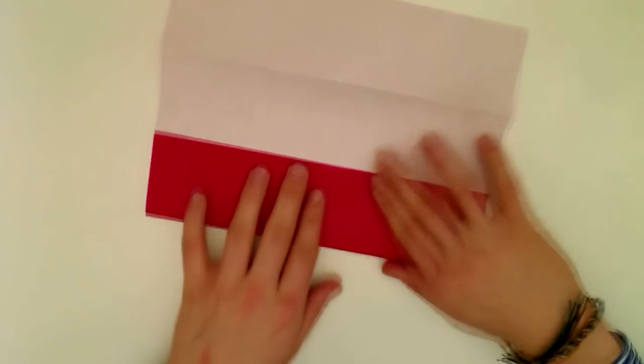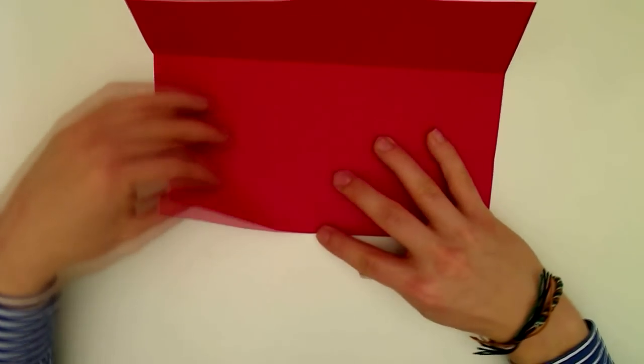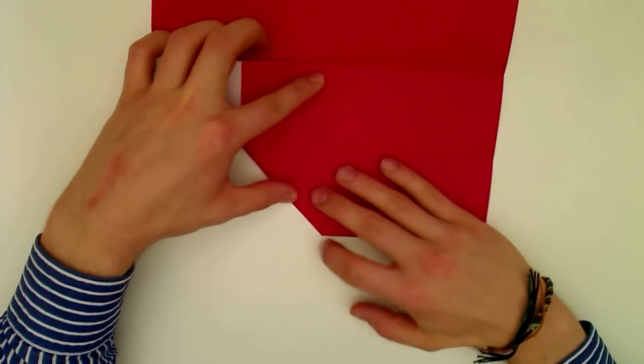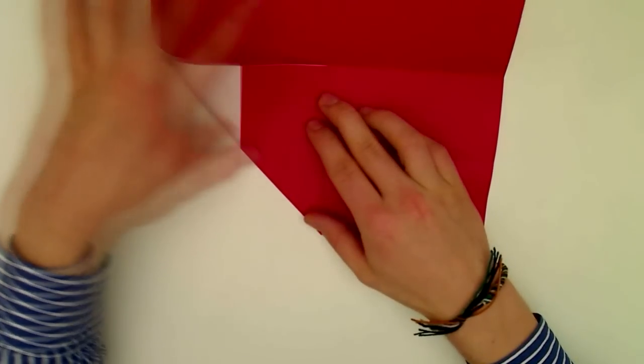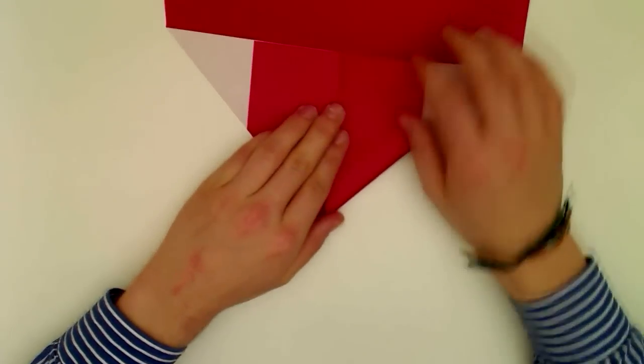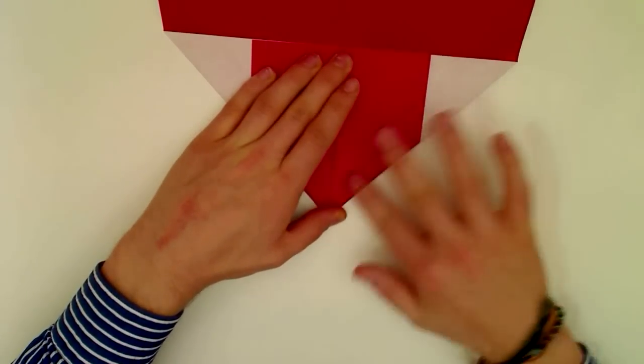Now turn the sheet over once more, and fold this edge to this point. You will see that the corner will meet with the cross between the two creases we just created, and also the edges are aligned. A simple 45-degree crease.